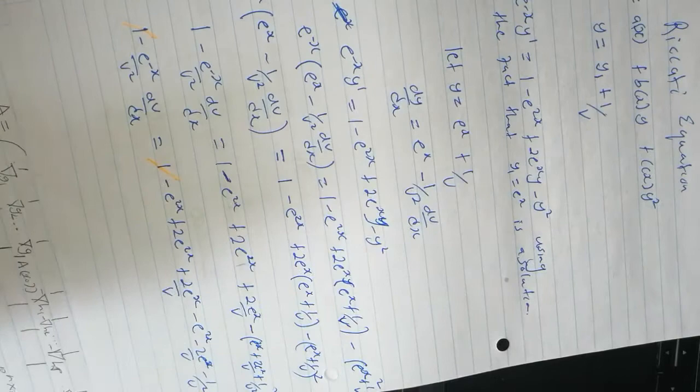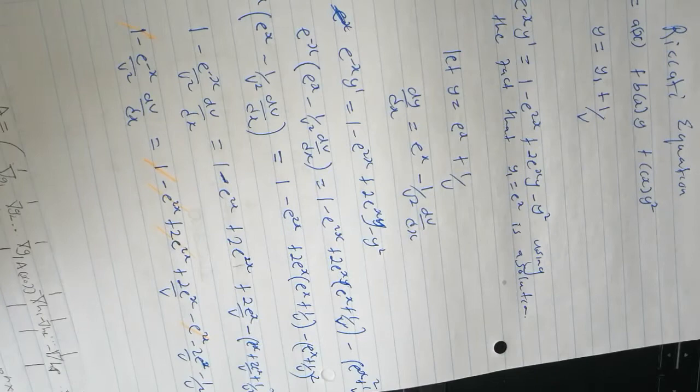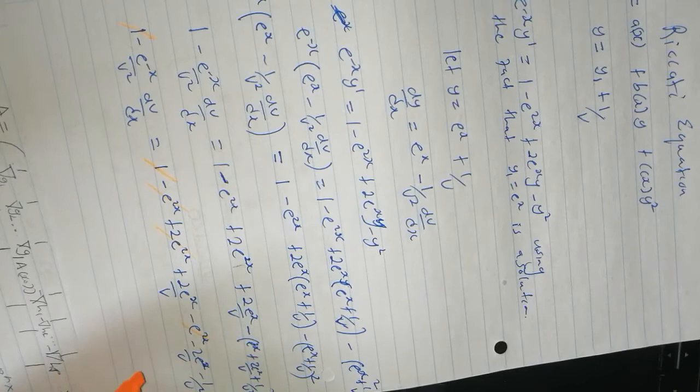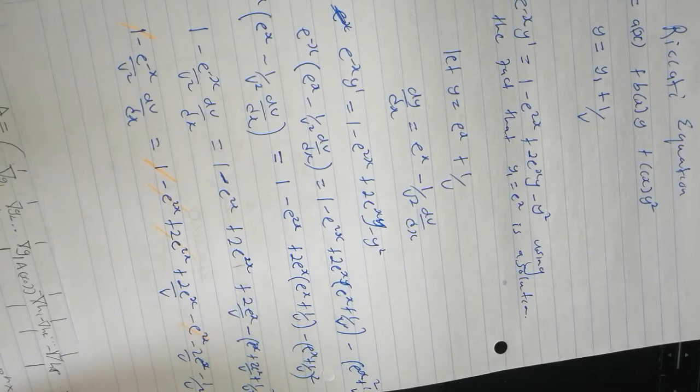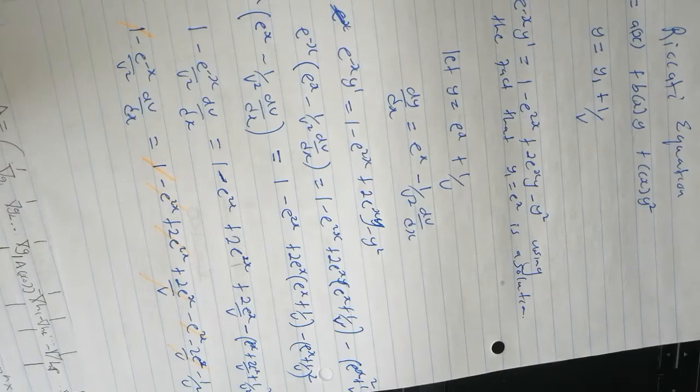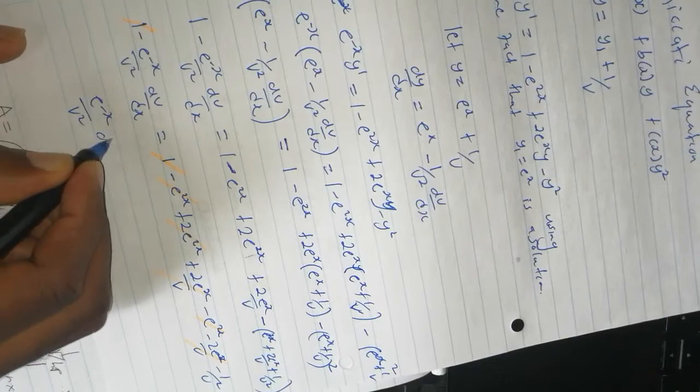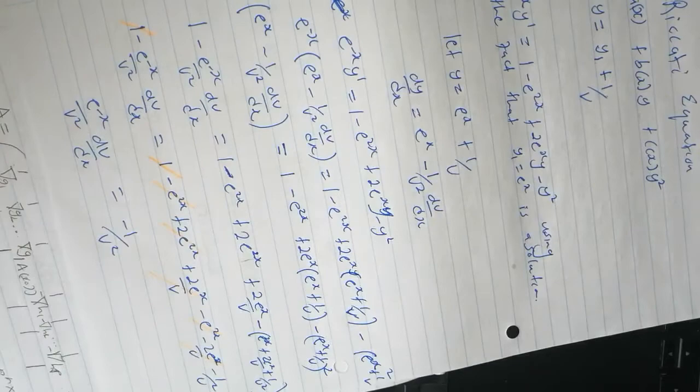Now I'm going to cancel some terms. These will cancel each other, and these will cancel each other as well. What we'll be left with is e to the power negative x over v squared dv/dx minus 1 over v squared.